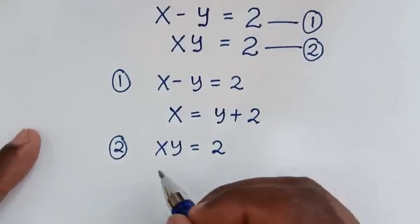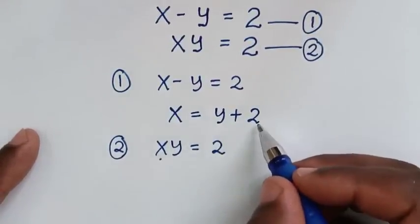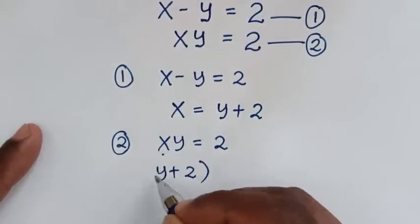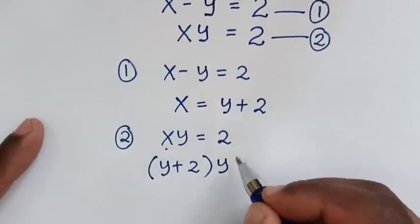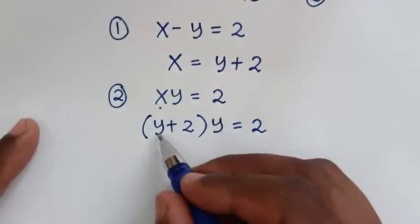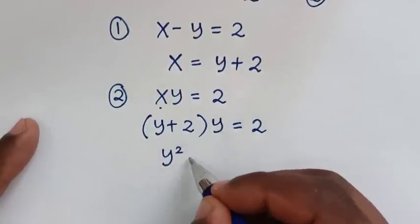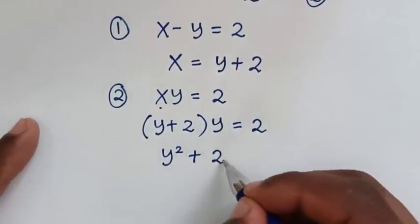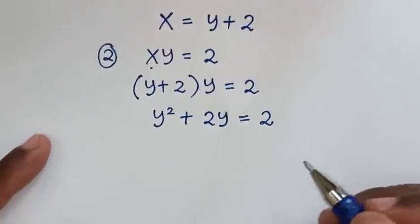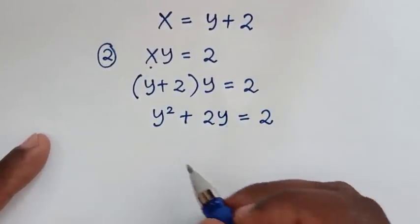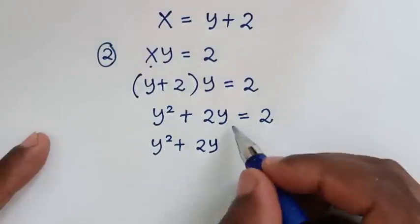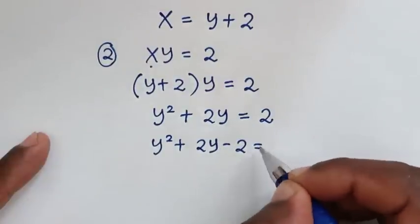We'll substitute the value of x, which is y plus 2, into equation 2. So x becomes y plus 2, and we have bracket y plus 2 times y is equal to 2. Expanding: y times y is y squared, plus y times 2 is 2y, equals 2. Taking 2 to the left side gives y squared plus 2y minus 2 is equal to 0.